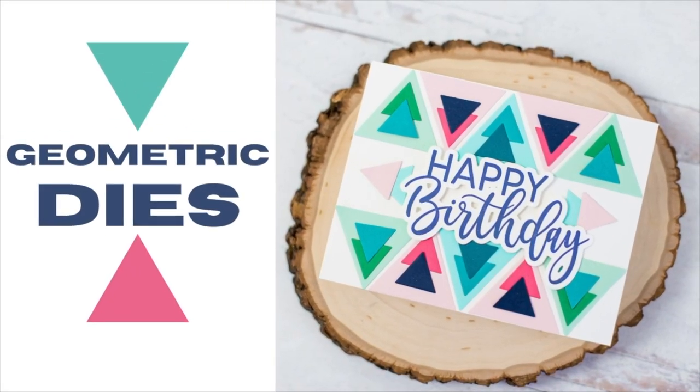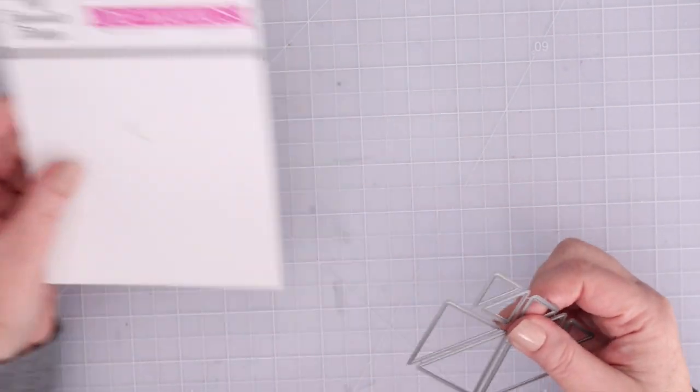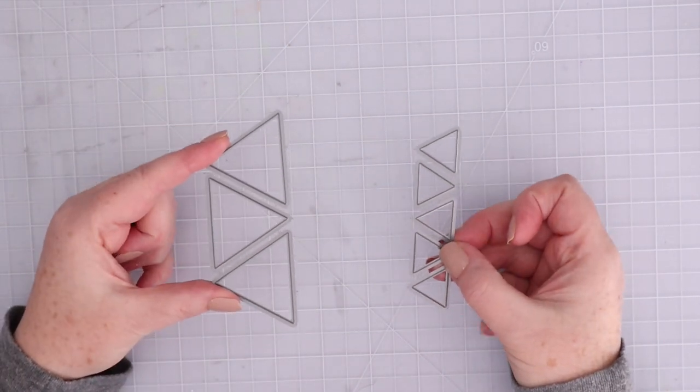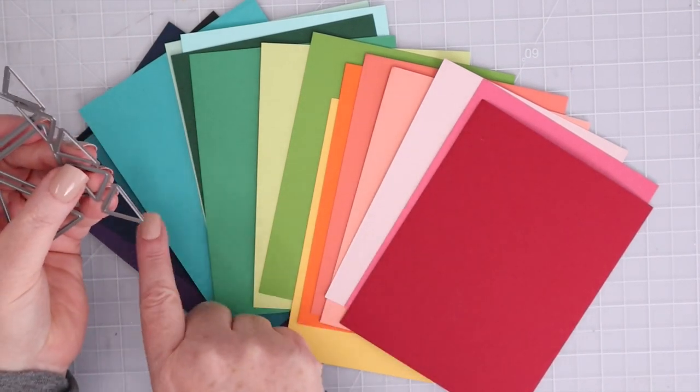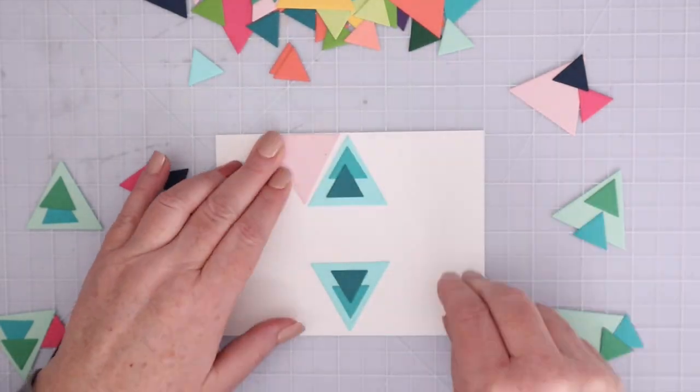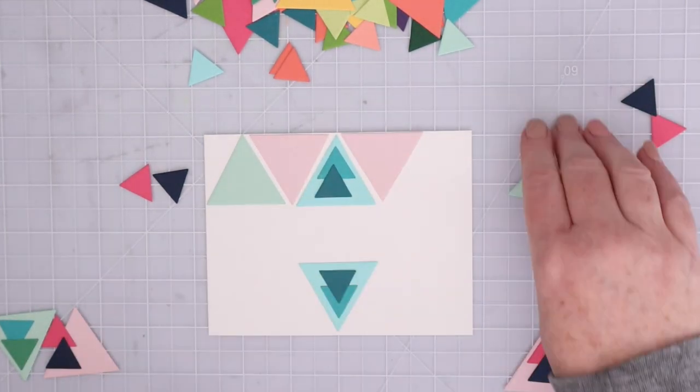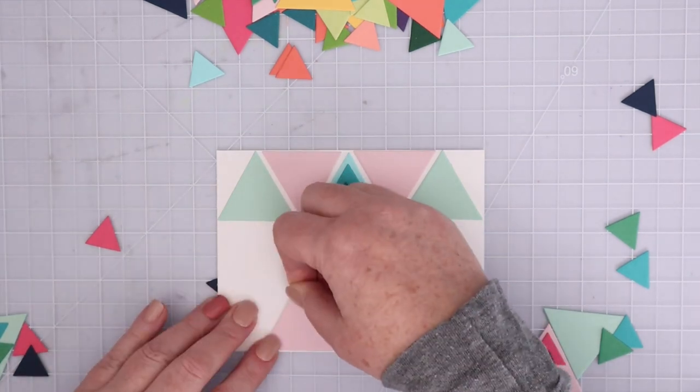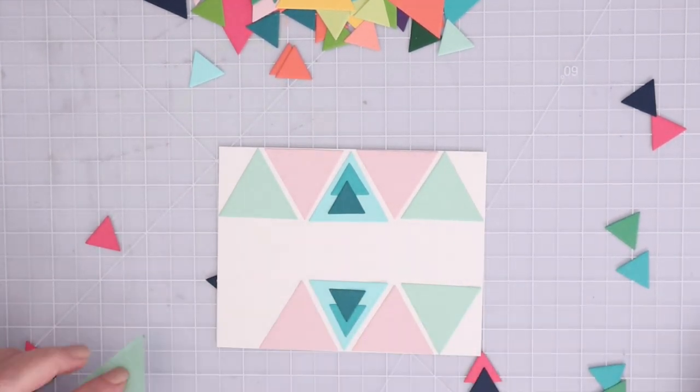Now let's move on to geometric dies. Lots of companies have small and affordable die sets featuring geometric shapes that can be used to create backgrounds or even focal images. I'm using this My Favorite Things Trendy Triangles die set. I love having multiples of the same size so I can easily cut out a bunch of triangles at once. Today I'm using Concord and Ninth cardstock from an assortment pack. I'm just going to cut out a bunch of triangles and store whatever I don't use today in my die pocket for future projects.